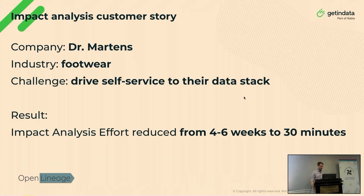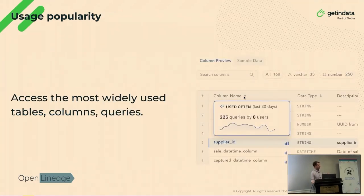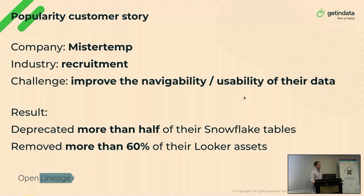Here are some examples of companies that have implemented lineage with Atlan. Dr. Martens, the footwear company, managed to reduce the time on their impact analysis from weeks to minutes. Even a small feature like a popularity index — seeing how popular a given asset is, how many users are checking it, how many datasets are connected to it — can bring a lot of impact at the enterprise level. It allowed Mr. Temp, a recruitment company, to determine which data assets could be deprecated.